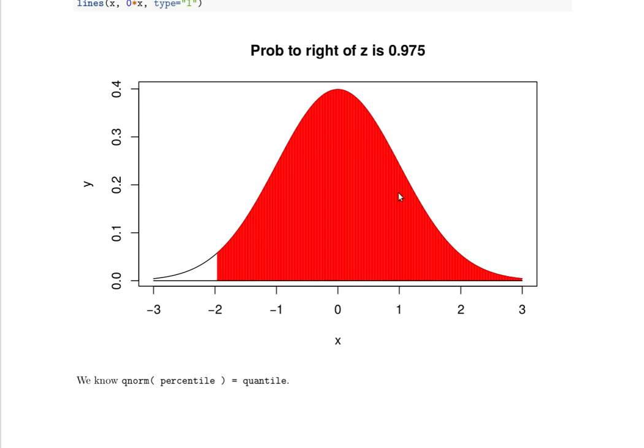We know this probability to the right so we need to find that probability to the left. If the probability to the right is 0.975 then this probability to the left, this pink area, will be 1 minus 0.975.